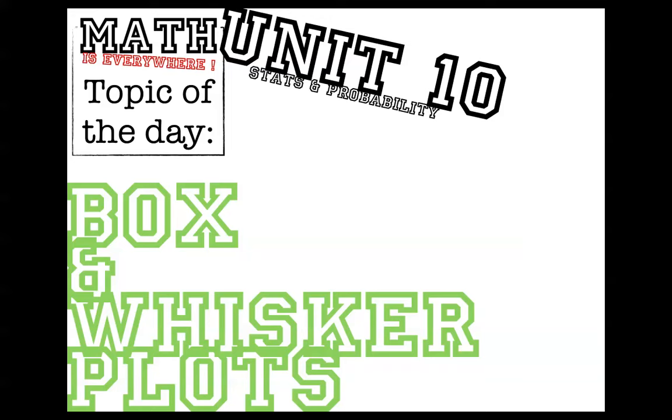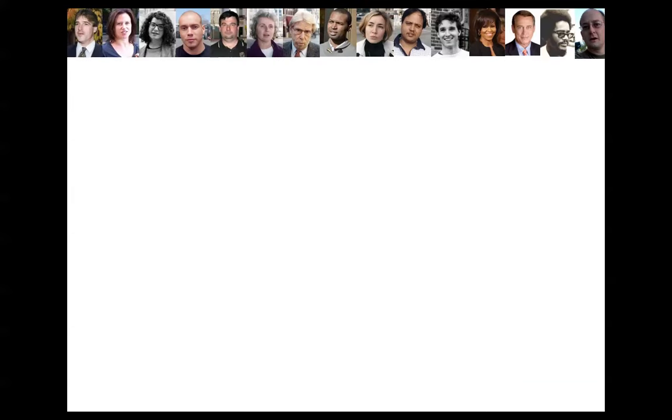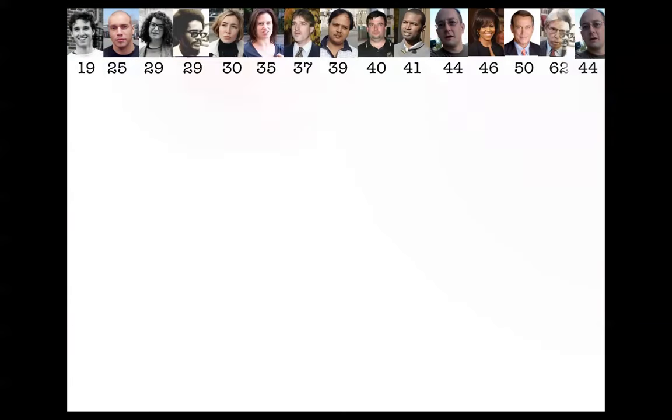Well, we're going to find out, but in order to make a box and whisker plot, first we need data. So to get some data, I surveyed some people and asked them how old they are, and these 15 people told me their ages. That's great, except it's not super helpful unless we do what we like to do with data, and that is put it in numerical order.